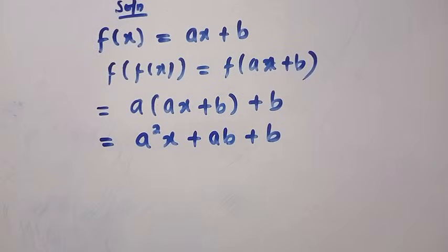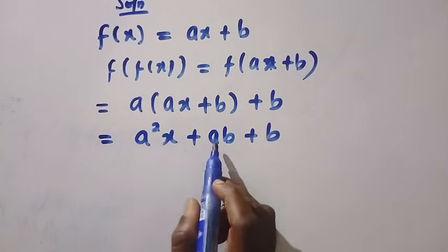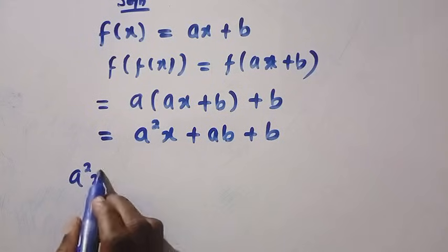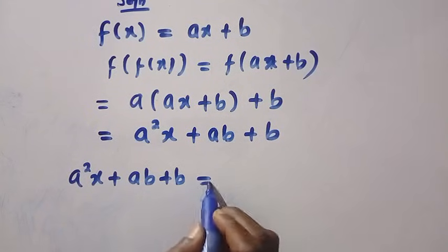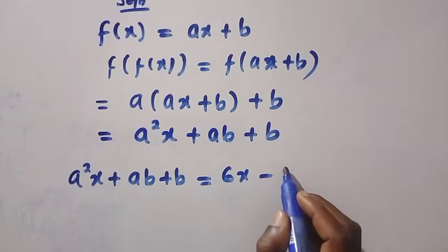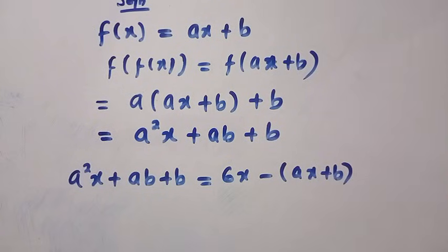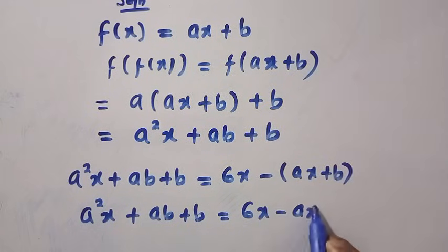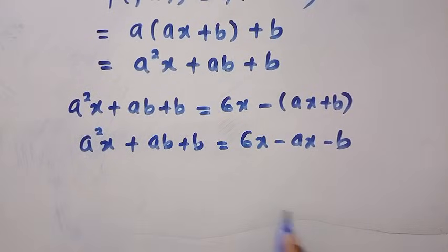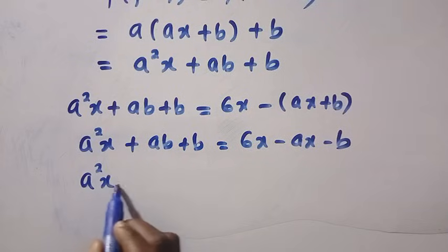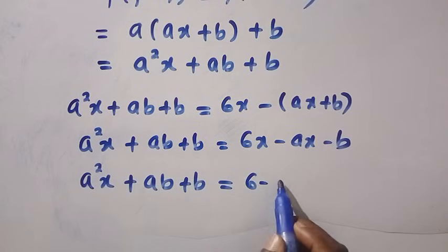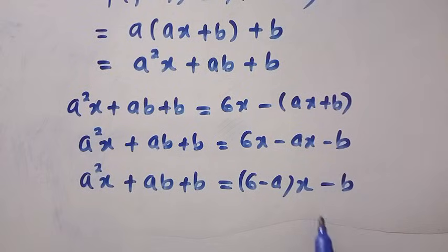Let's equate the two sides. For f of f of x, we get a squared x plus ab plus b. Equating both, we are going to have a squared x plus ab plus b equals 6x minus f of x is ax plus b. Here we have a squared x plus ab plus b equals, let's expand this out: 6x minus ax minus b.